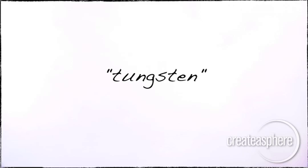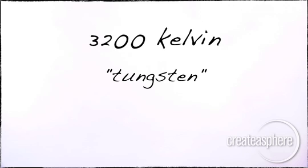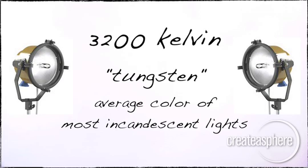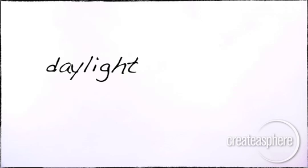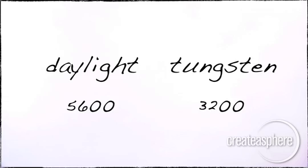Then there's tungsten, which is redder than daylight. It comes in at 3,200 degrees, and it's the color of most incandescent lights we use for filmmaking. Daylight, 5,600; tungsten, 3,200.